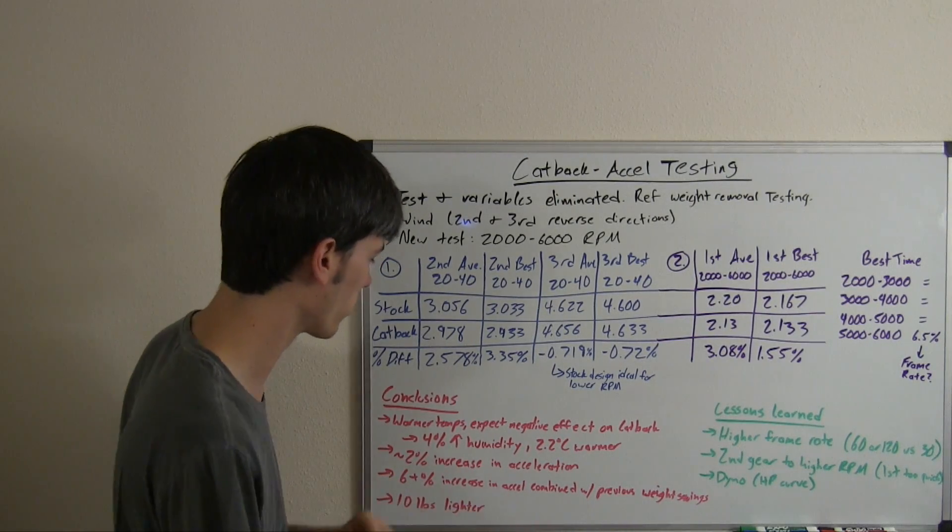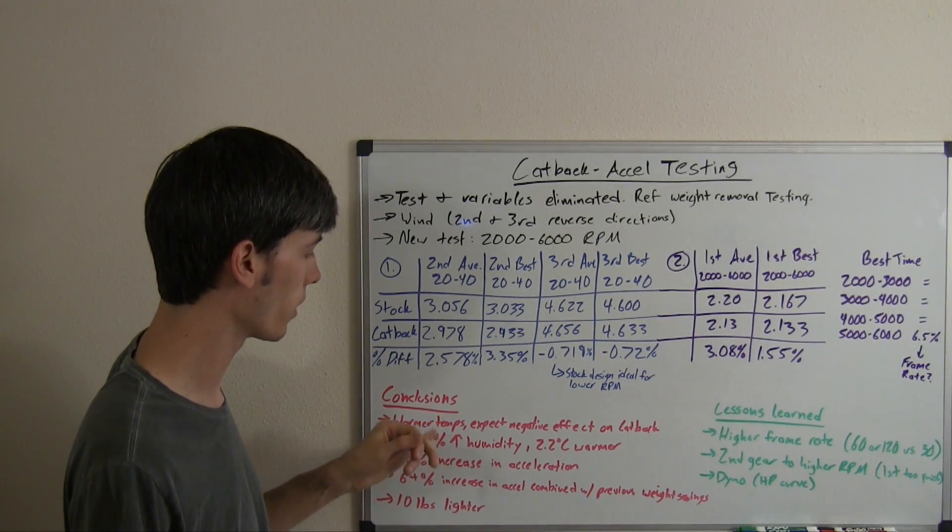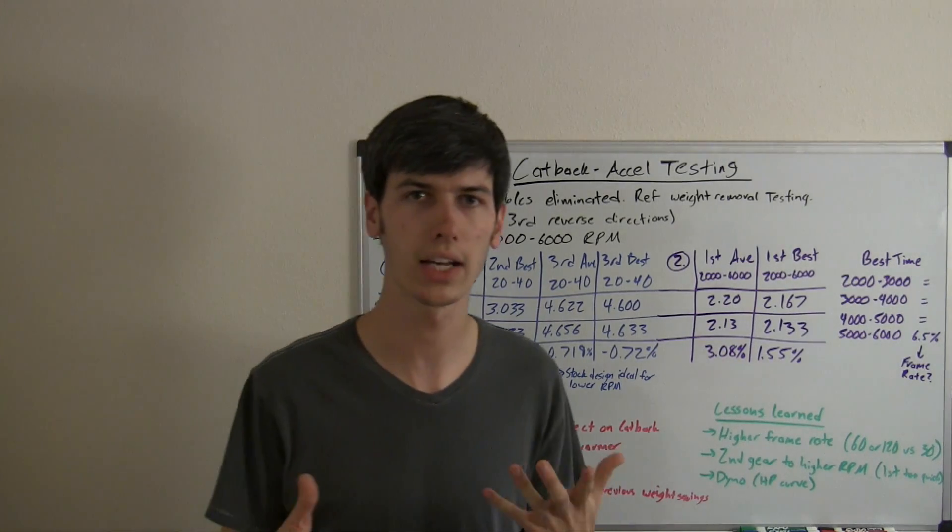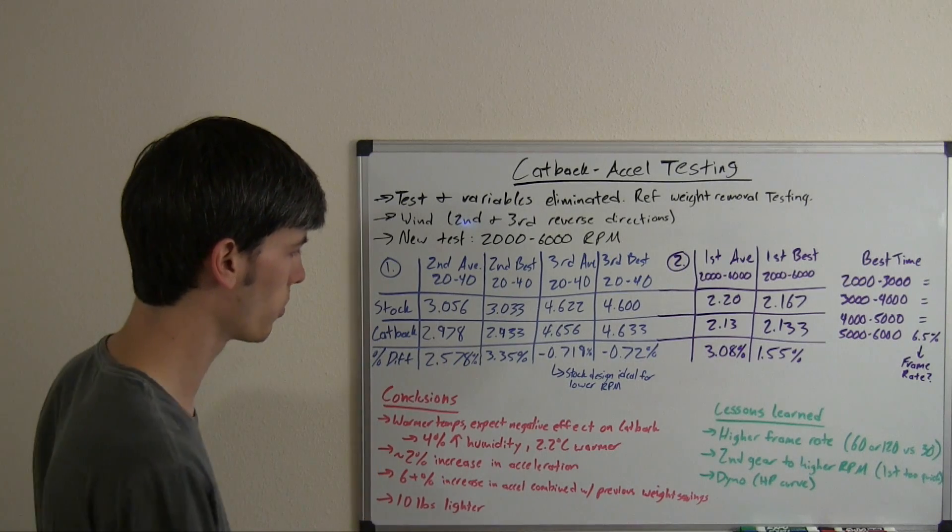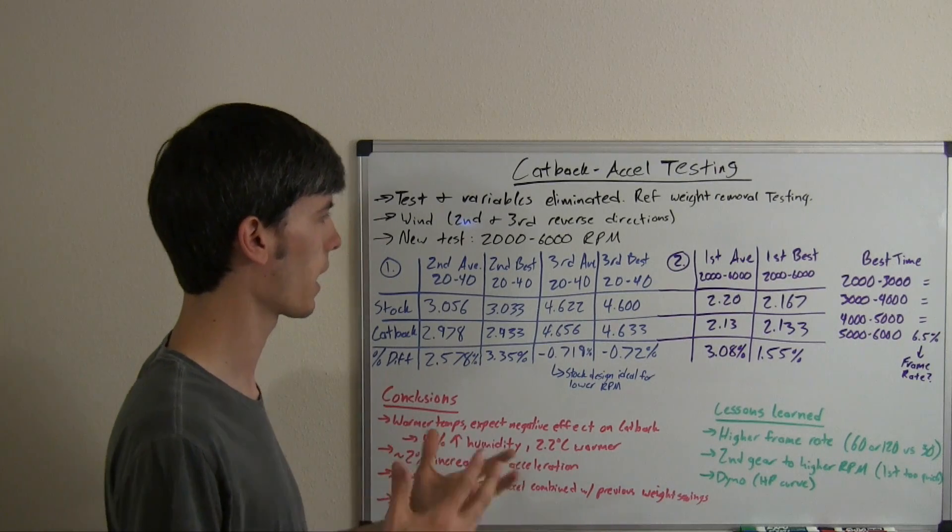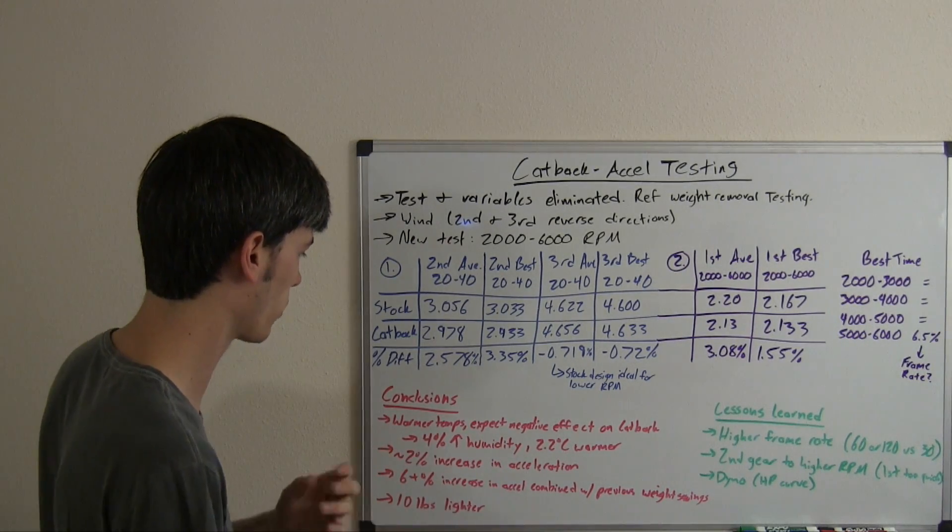Conclusions. One of the things I wanted to mention was that with the cat-back exhaust, the testing was actually done with warmer temperatures and a higher humidity, so I would expect this to have a negative effect. It was actually 4% higher humidity and 2.2% Celsius warmer with the cat-back exhaust. I would expect the cat-back times to be a little bit slower than they could have been had it been cooler, less humid air.